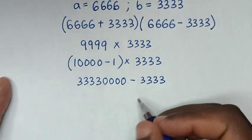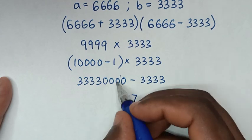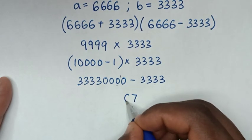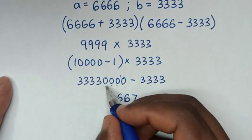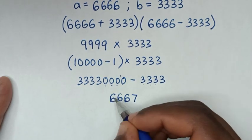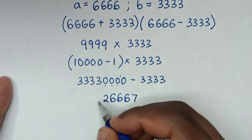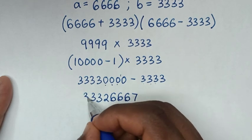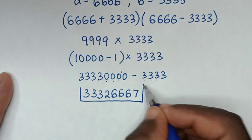Subtracting 33,330,000 minus 3,333: the last digit is 10 minus 3 equals 7, then 9 minus 3 equals 6, 9 minus 3 equals 6, 9 minus 3 equals 6, and borrowing one gives us 2, then 3, 3, 3. Therefore, our final answer is 33,326,667.